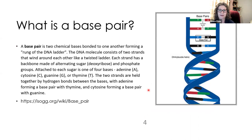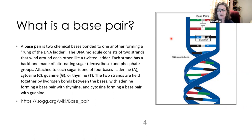Let's go back to basics with the science and talk about alleles — the A, T, C, and G's. A base pair is two chemical bases bonded to one another, forming a rung of the DNA ladder. The DNA molecule consists of two strands that wind around each other like a twisted ladder, with a backbone of alternating sugar and phosphate groups. The bases are adenine, cytosine, guanine, and thymine. Adenine pairs with thymine and cytosine pairs with guanine. DNA companies use the sequencing of A, C, G, and T's to analyze our DNA and do shared matching.